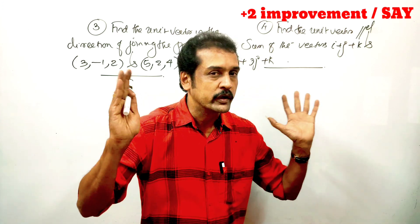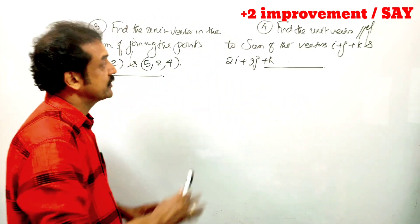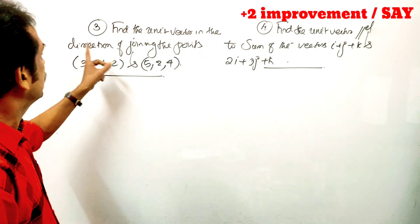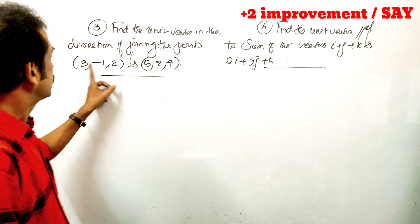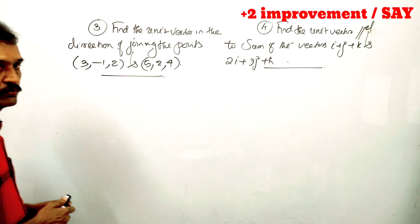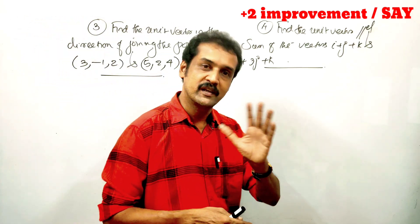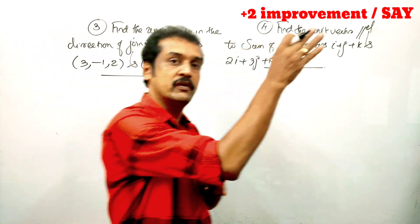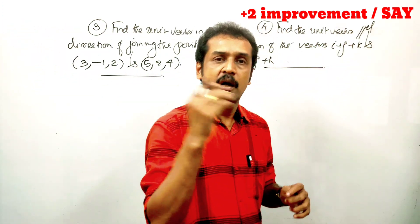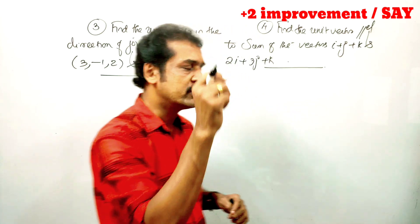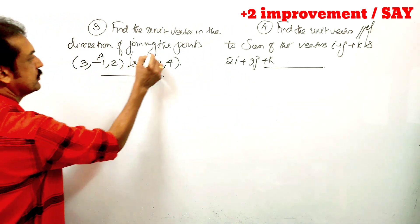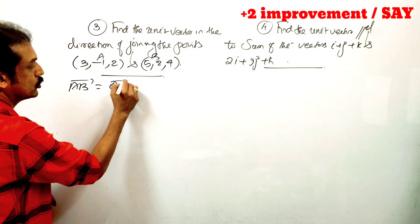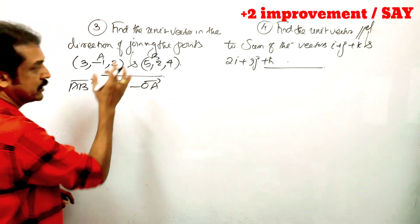Find the unit vector in the direction of the line joining the points (3, -1, 2) and (5, 2, 4). We will find the unit vector in the direction of the line. Vector AB is equal to OB minus OA — that is the formula.